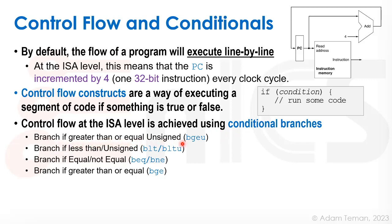So what RISC-V provides us is branch if greater than or equal unsigned, that's BGEU. Branch if greater, if less than or less than unsigned, that's BLT or BLTU. Branch if equal or not equal, BEQ or BNE, and branch if greater than or equal, BGE.